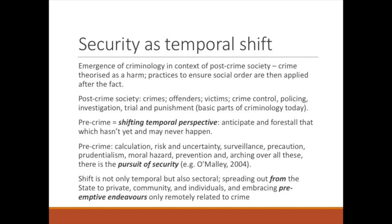The emergence of criminology was in the context of a post-crime society, meaning that crime was theorized as a harm and practices to ensure social order were applied after the fact. In a post-crime society you have crimes, offenders, victims, crime control, policing, investigations, trial, and punishment. In pre-crime we have a shifting temporal perspective — we are anticipating and trying to prevent that which hasn't yet and might not even happen. So in pre-crime we have calculation, risks, uncertainty, surveillance, precaution, moral hazard, prevention, and over all of these the pursuit of security.